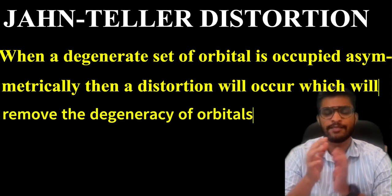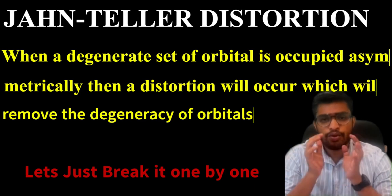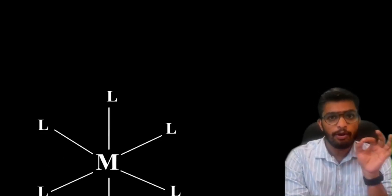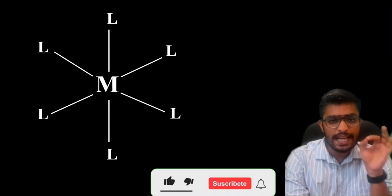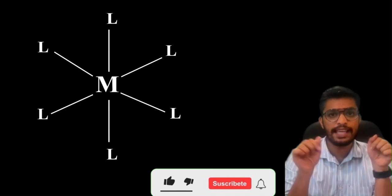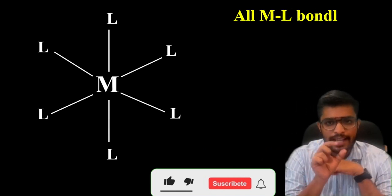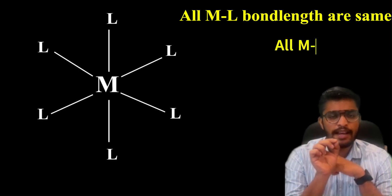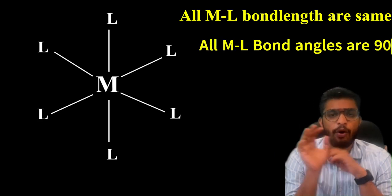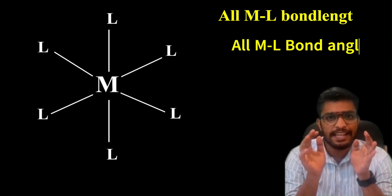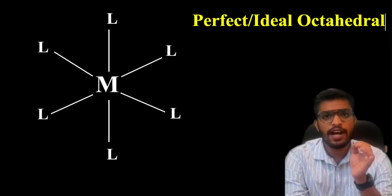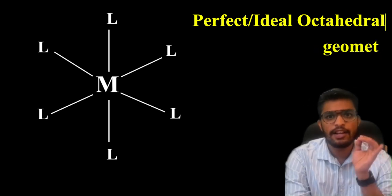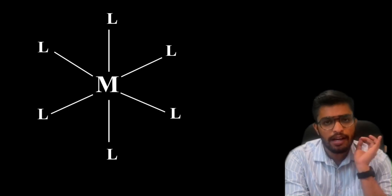Let's break it one-by-one. We can take an octahedral complex example. Central metal ion, six ligands surrounding, and every metal-ligand bond length is the same, plus every metal-ligand bond angle is 90 degrees. This is a perfect octahedral geometry or an ideal octahedral geometry.